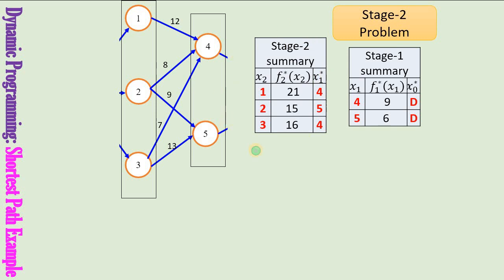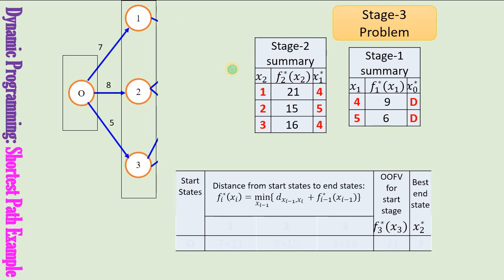This table summarizes the stage 2 problem. Now we move to the stage 3 problem. Stage 3 is defined as going from stage 3 to stage 2, and since this is backward recursion, this is the last problem we need to solve.